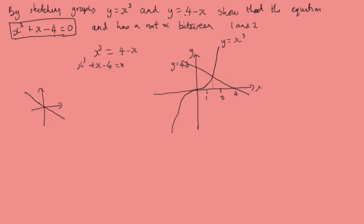When you make your sketch, you're showing all the key features of each graph, such as the coordinates of any turning points. The turning point here is quite obvious because it's x cubed. So, it's just at the origin and where they intersect. Now, from this, we can then see that the solution for x cubed plus x minus 4 equals 0 must have a root between 1 and 2.